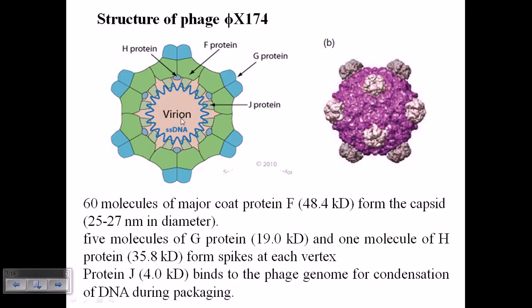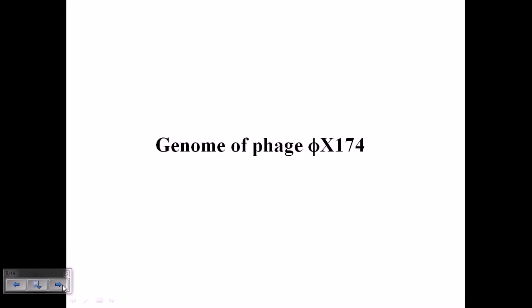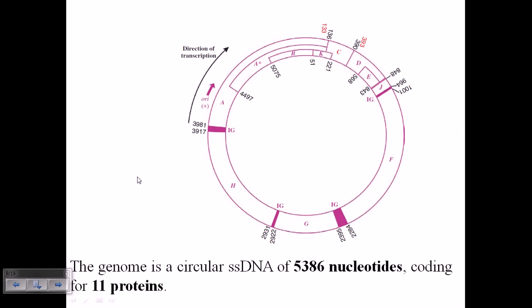We are doing the compactness of DNA here. Now let us look at the genome of φX174. This is the genome which is a circular structure of single-stranded DNA - a circular single-stranded DNA of 5,386 nucleotides coding for 11 different proteins. You can see different gene regions: gene region A, B, K, C, and different genes are also present here.